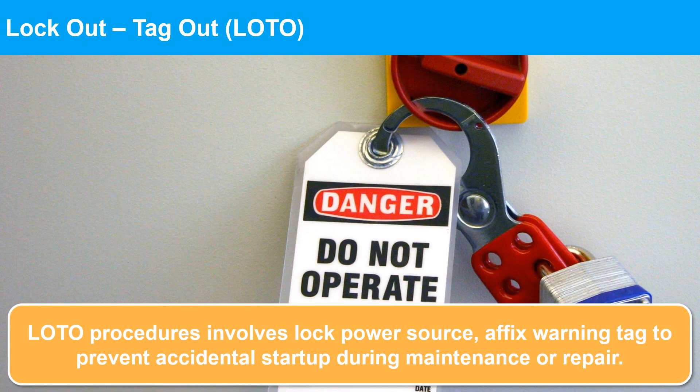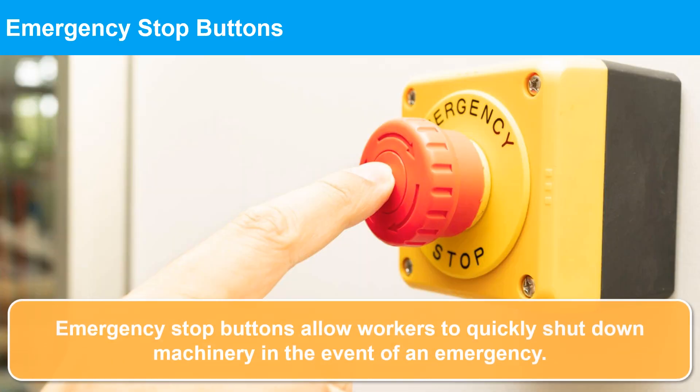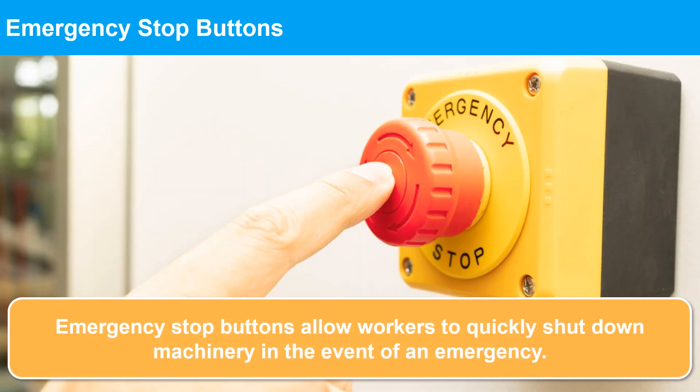Lock-out tag-out procedures involve locking out machinery's power source and affixing a warning tag to prevent accidental startup during maintenance or repair activities. Emergency stop buttons allow workers to quickly shut down machinery in the event of an emergency.